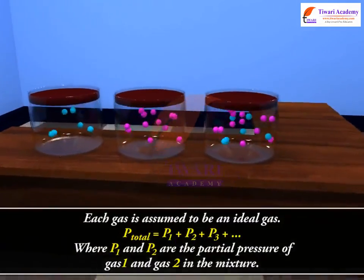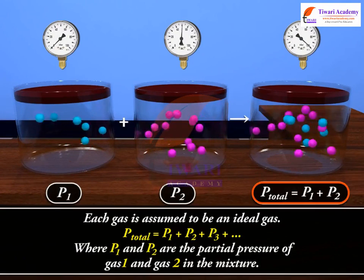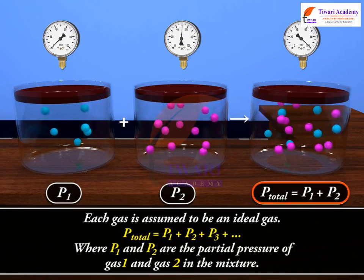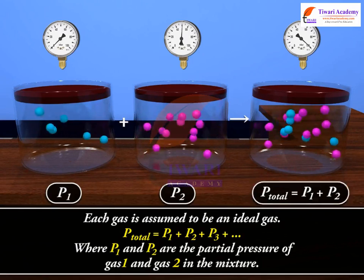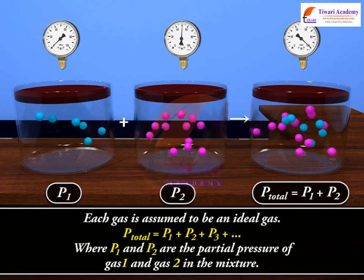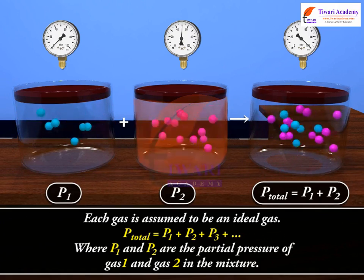Each gas is assumed to be an ideal gas. P total is equal to P1 plus P2 plus P3 and so on, where P1 and P2 are the partial pressure of gas 1 and gas 2 in the mixture.